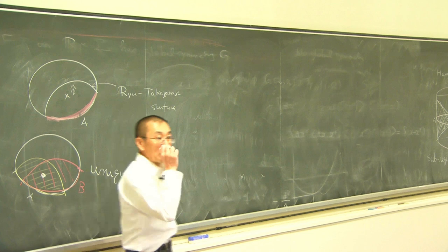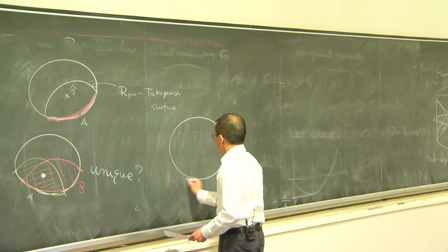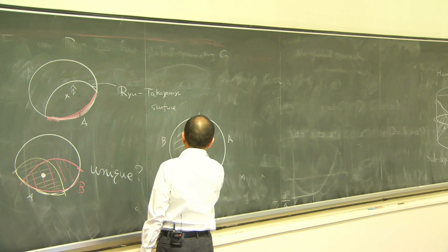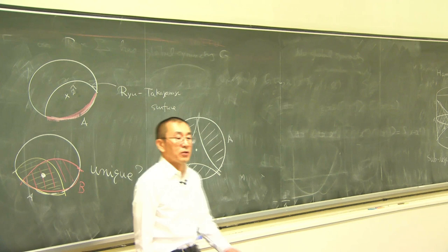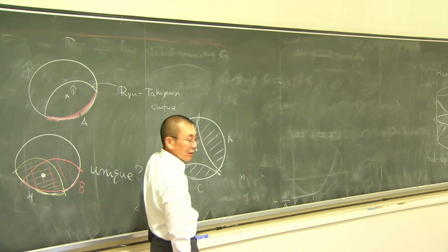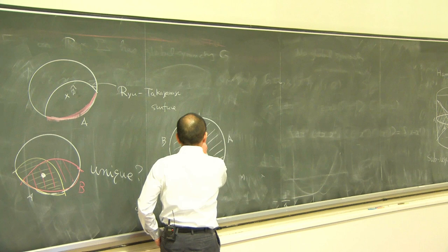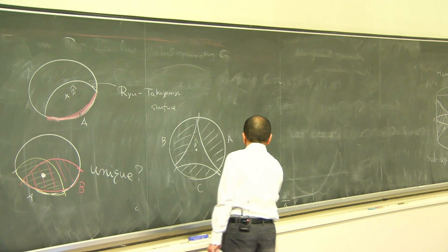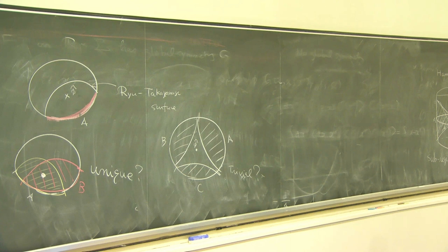There is another problem. Suppose you divide the space into three segments A, B, C. There is an entanglement wedge for each. Suppose there is an operator in the middle which is not in any of these entanglement wedges. Then this operator cannot be constructed from operators in B, and in fact it commutes with operators in B, with operators in C, and with operators in A. That means phi-hat commutes with every local operator, so it would be trivial — which is a contradiction.